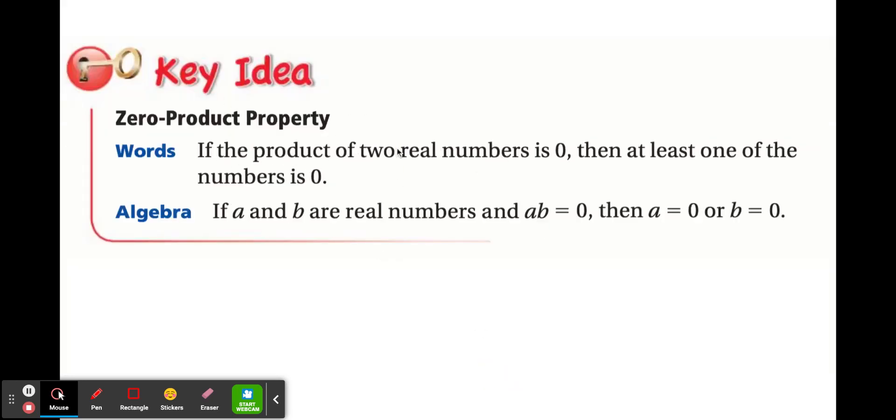So your key idea: if the product of two real numbers is 0, then at least one of the numbers is 0. We know this to be true. Anything times 0 is 0. So if you have a times b is equal to 0, either a is 0 or b is 0. One of them has to be. The same would be true if we had x plus 3 and x plus 2 equal to 0. That means either this binomial, x plus 3 equals 0, or x plus 2 equals 0.